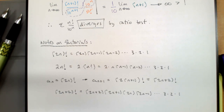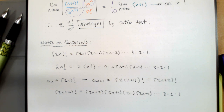So there are factorials and the ratio test. Get working on simplifying things, but more importantly, get working on recognizing that factorials dominate exponentials, which dominate polynomials — then start comparing numerator and denominator to see what's going on.